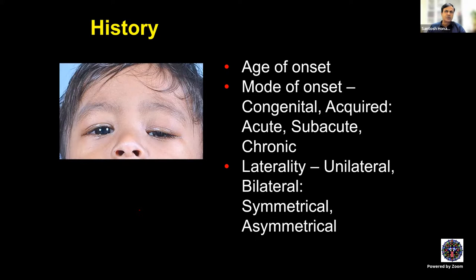To answer these questions and arrive at surgical decisions, you go through a series of evaluations beginning with history. Age of onset in congenital ptosis is not relevant — it is by birth. But in acquired ptosis, age of onset indicates etiology: acute onset is generally neurogenic, onset over weeks is possibly myogenic, and chronic onset should make you think of aponeurotic ptosis.